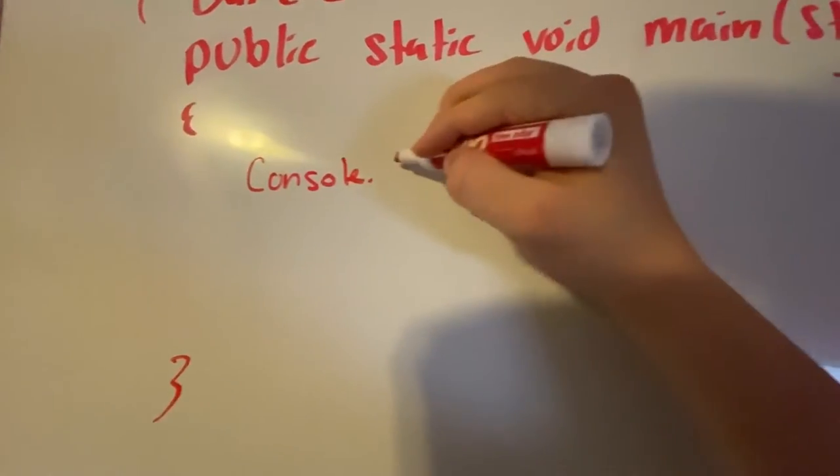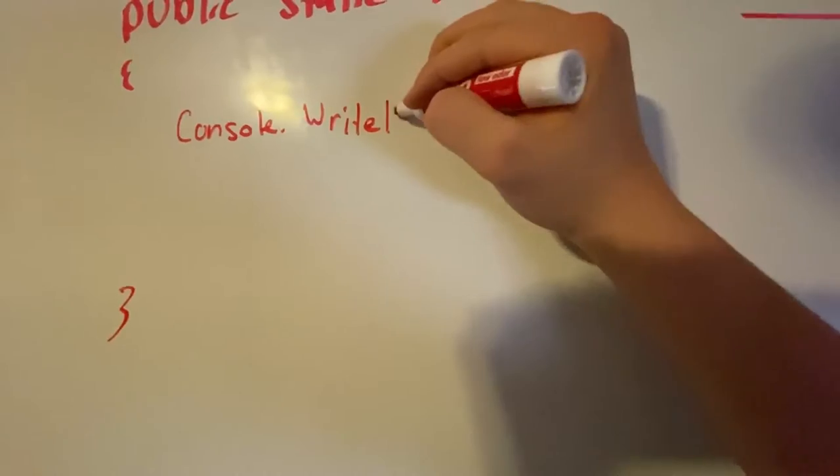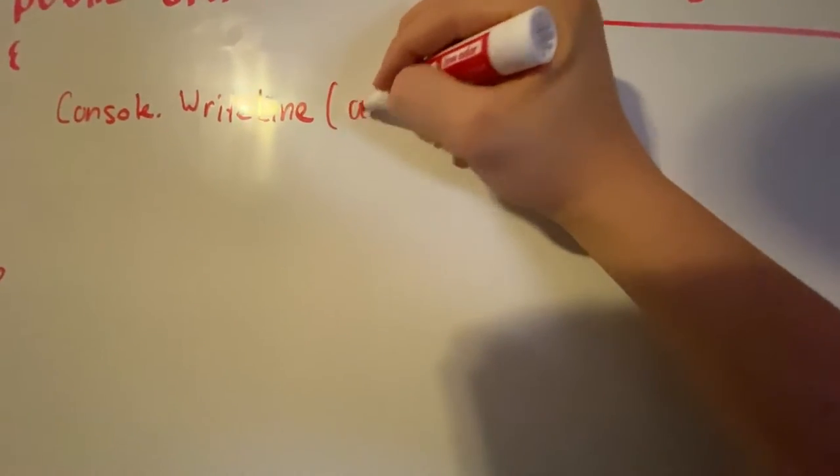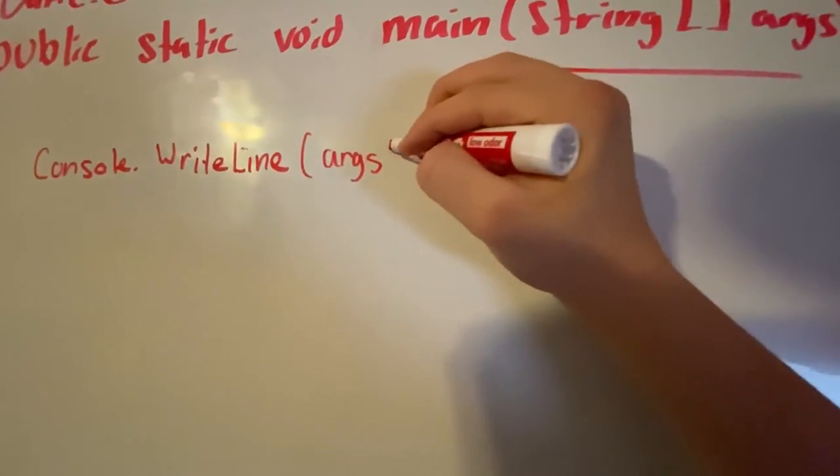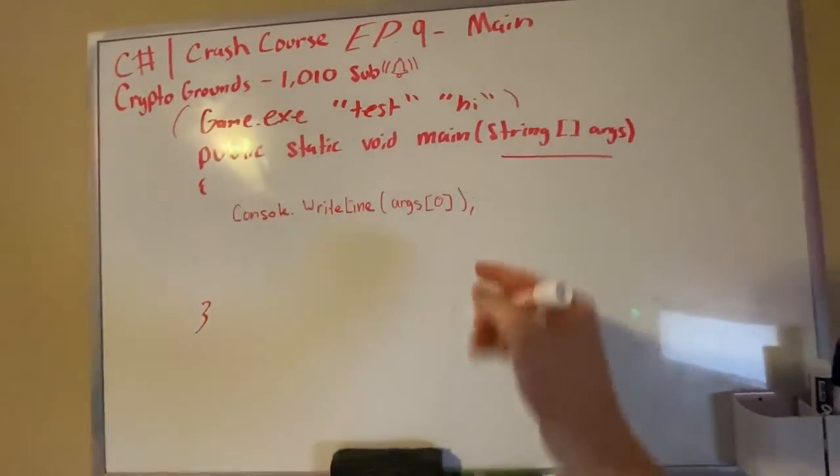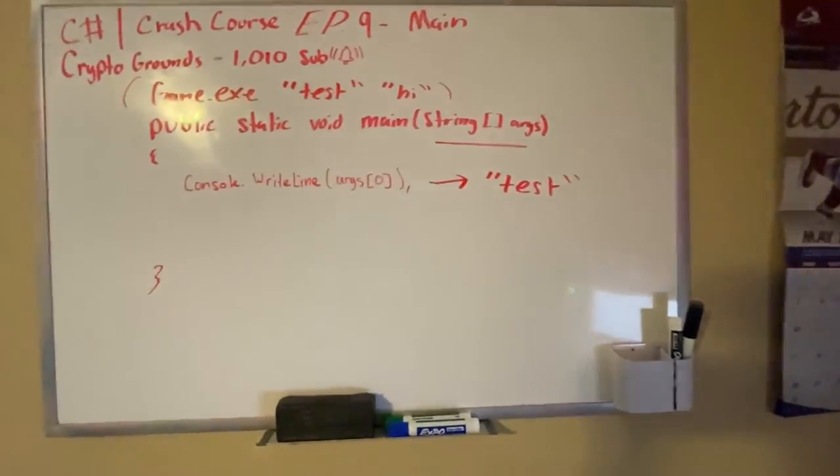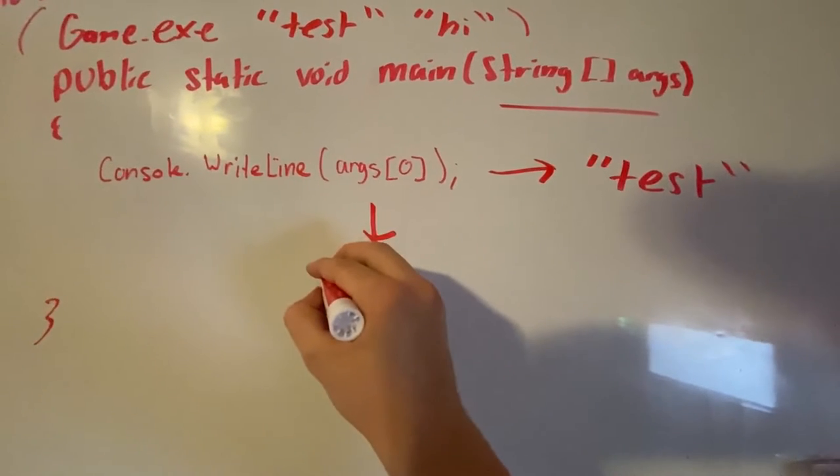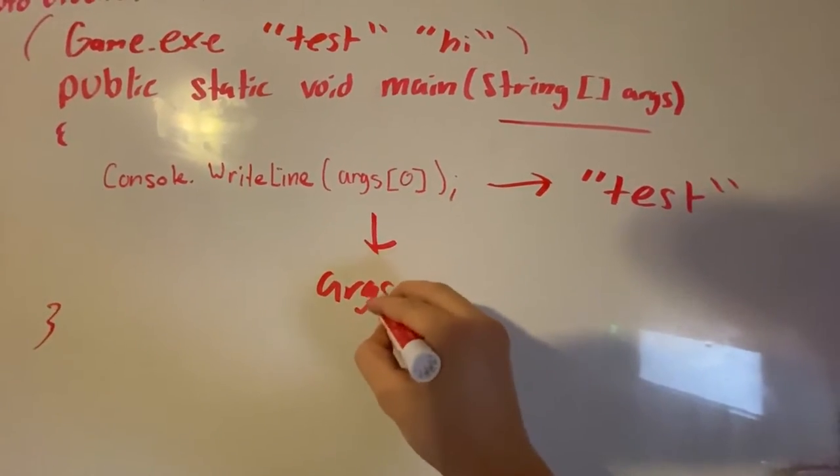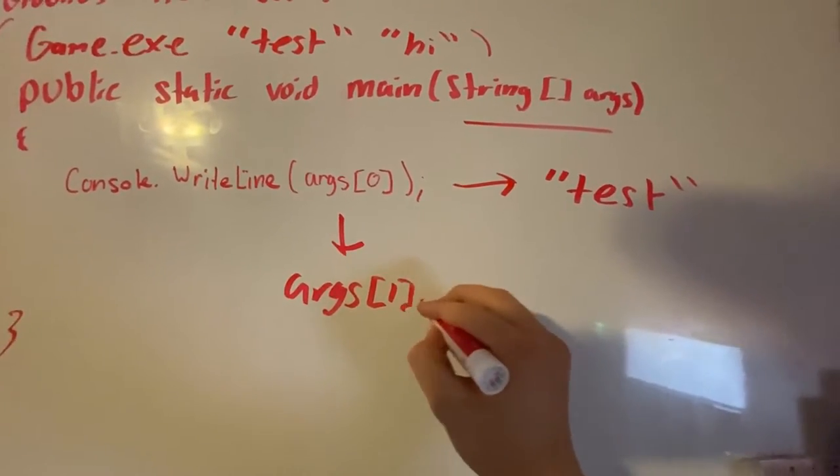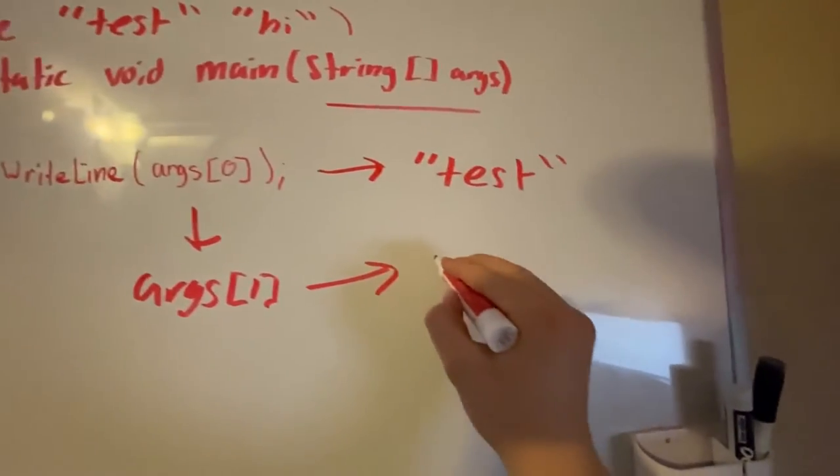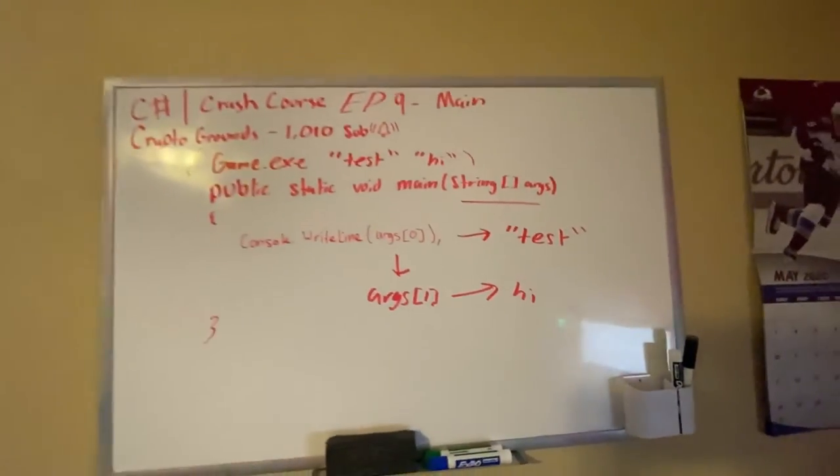So if we do console.WriteLine and if we do args at index zero, it will print out 'test' in the console. Same thing if we do args at index one, it will produce 'hi'. So that is what our string args is.